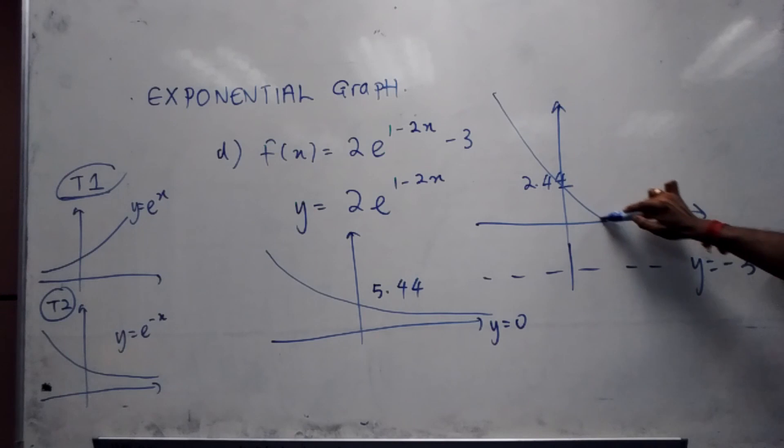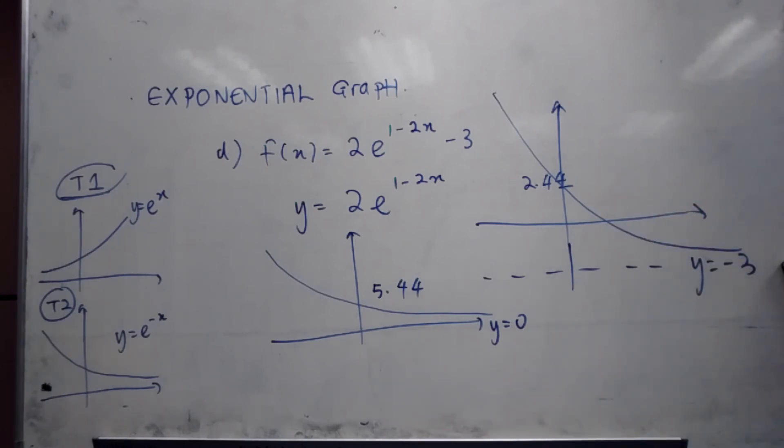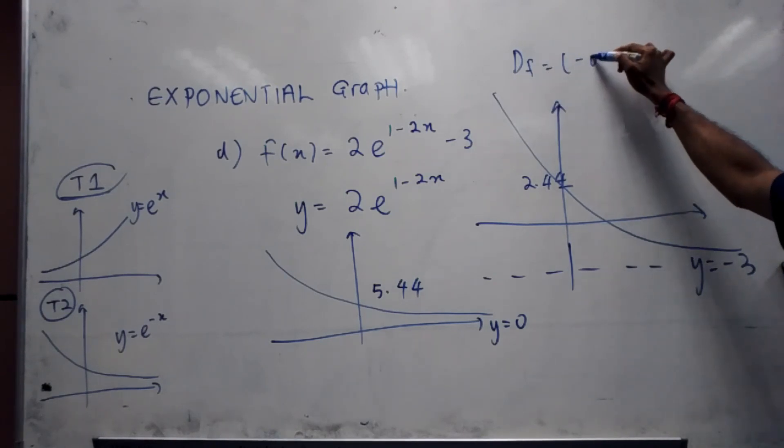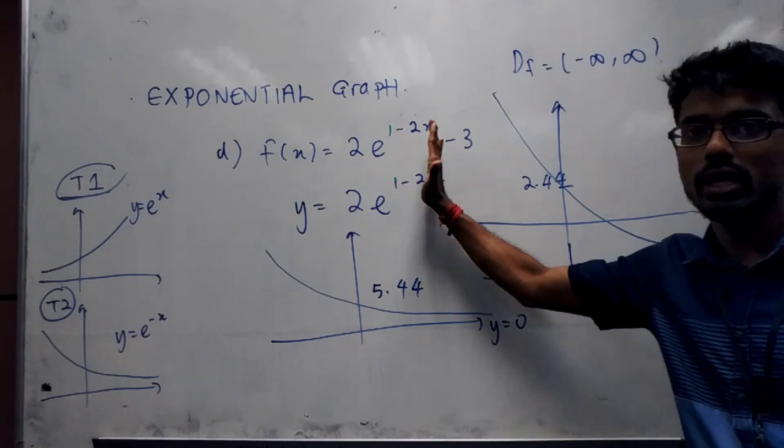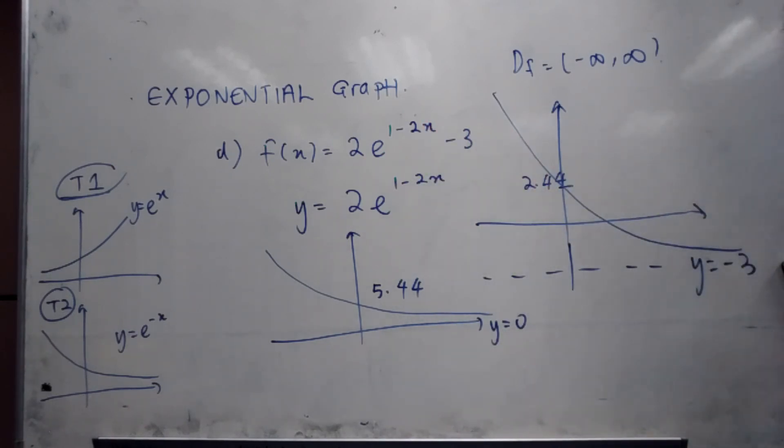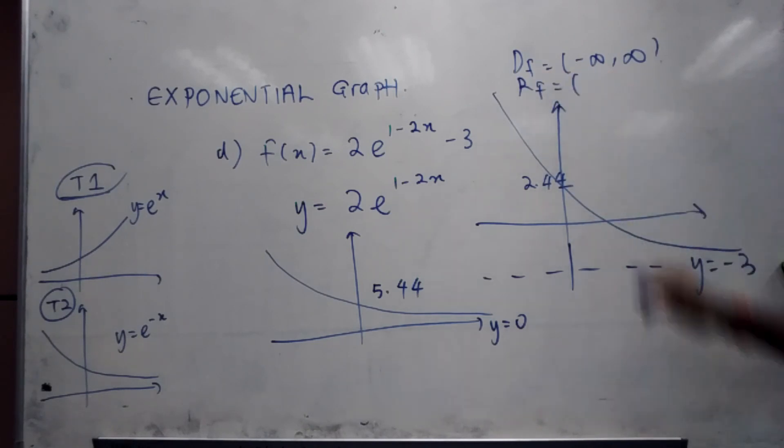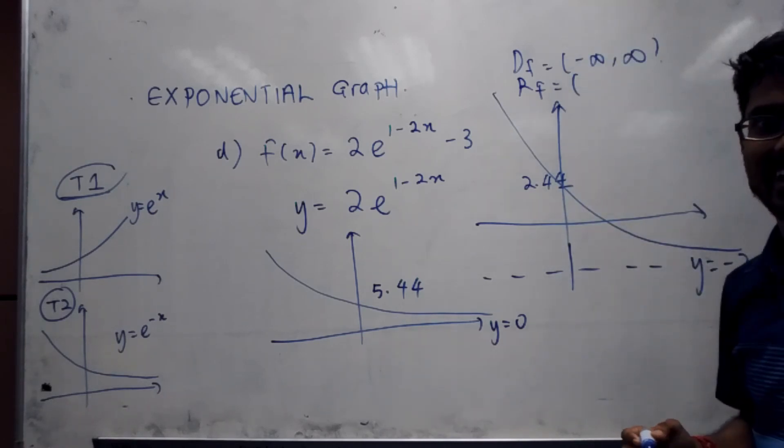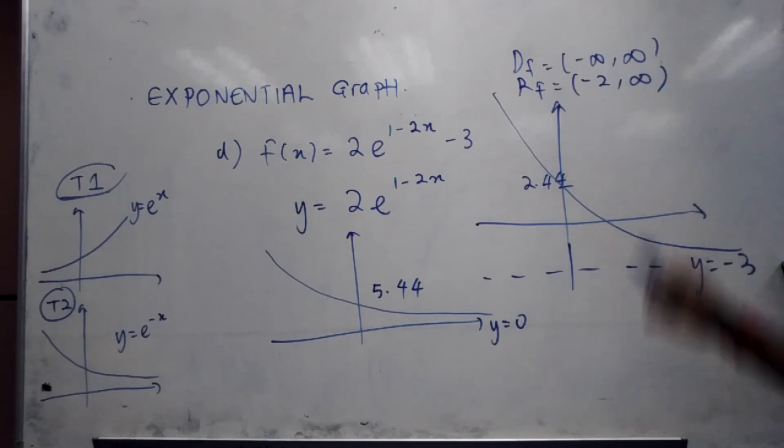And always for completeness, we will state what is our domain and what is our range. So our domain again is going to be negative infinity to infinity, the value of x where the graph exists. So this is where it exists. And then the range, the range is going to be the lowest value to the highest value of y where the function exists, so that's going to be negative 3 to infinity. That's all guys.